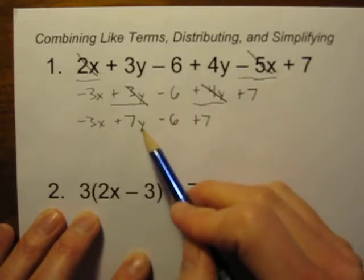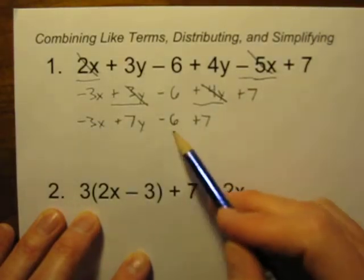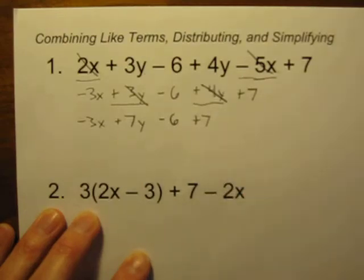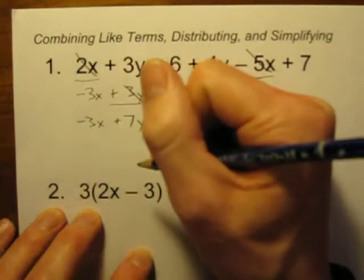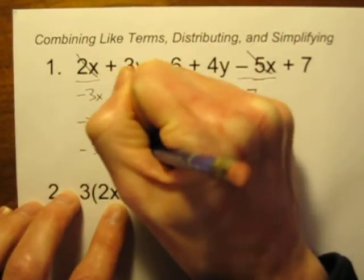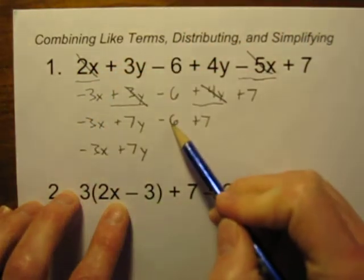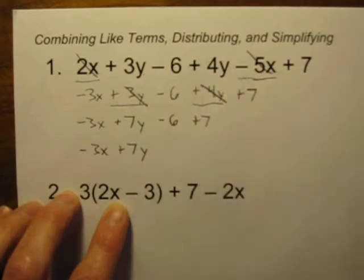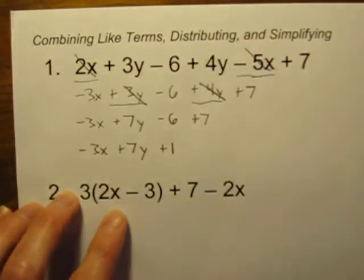We've combined the x terms, we've combined the y terms. Now let's just combine the regular old numbers. So let's rewrite what's left: minus 3x plus 7y. And what is negative 6 plus 7? Well that is just a plus 1.